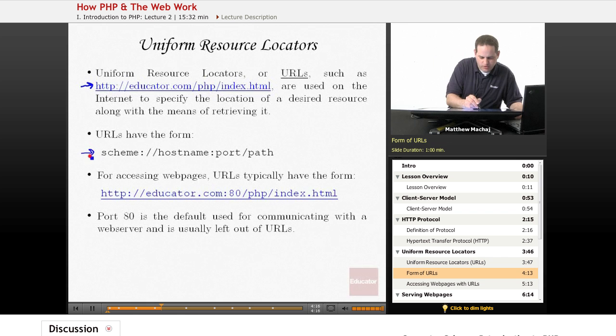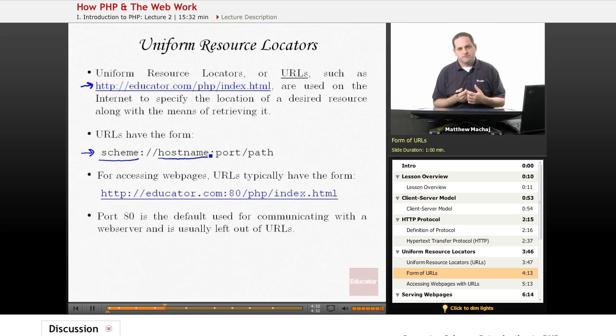URLs have a specific form. This is a simplified form; there's additional parts that can be added to it. Basically, it contains a scheme, which describes the means of retrieving a particular resource. It contains a hostname, which is basically the name of the server or the IP address of the server that has the content that you're trying to retrieve.